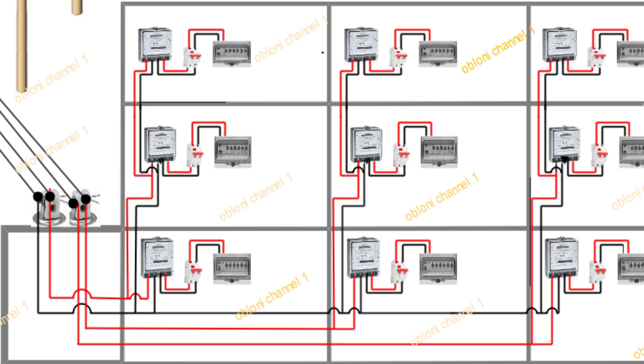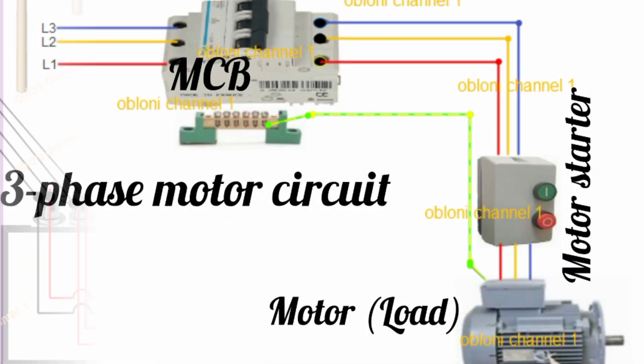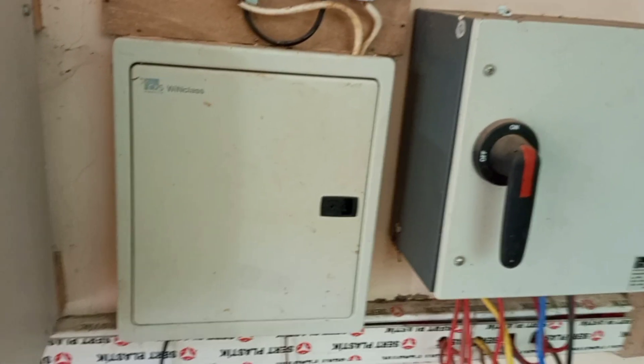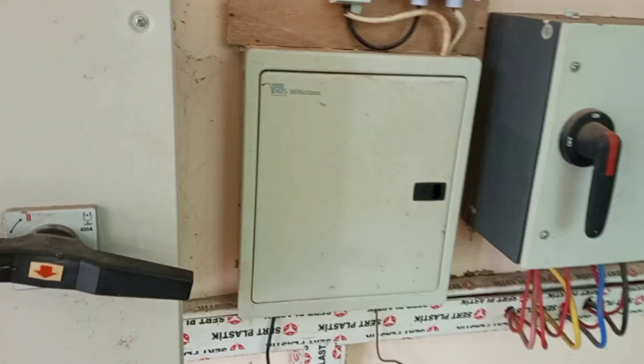In case we are using one three-phase meter for all these apartments, or in case there are some loads in this building that need three-phase supply to work, then we'll be bringing in the TPN isolators, TPN consumer units, or distribution boards. In another video I'll be explaining a situation where some loads in the wiring need three-phase supply to work, and in that case we need to bring in the three-phase meter, three-phase isolator, three-phase consumer unit, and other three-phase supply control equipment. So expect that in another video.